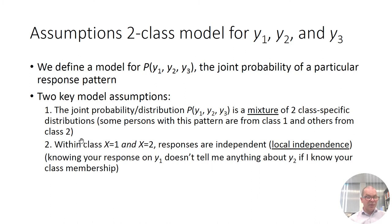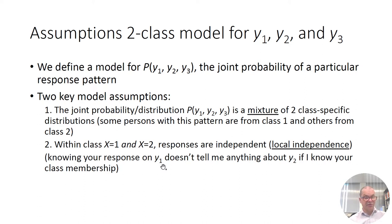The second assumption is that within latent classes — let's say within latent class 1, given x=1, or given x=2 — the responses are independent. This assumption is referred to as local independence, or conditional independence given class membership. That means if I know the class membership of a person and know they answered 1 on the first indicator, it doesn't tell me anything about what they will answer on the second indicator.